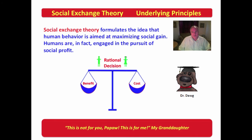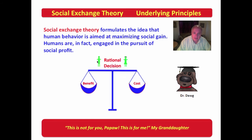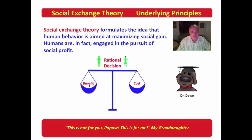Social exchange theory formulates the idea that human behavior is aimed at maximizing social gains. Humans are engaged in the pursuit of social profit. Looking at this picture of a male and a female: we males can't say females are selfish, and females can't say males are selfish — under social exchange theory, we're both selfish, looking to see what we can get out of any situation. We are rational creatures making decisions based on perceived benefit versus perceived cost. If benefit outweighs cost, it's a good decision; if cost outweighs benefit, it's a bad decision.